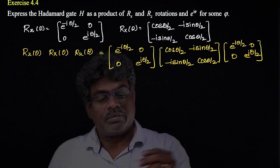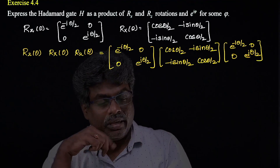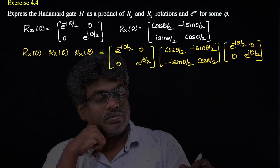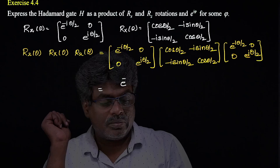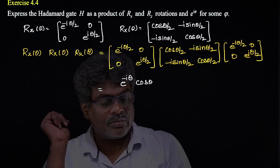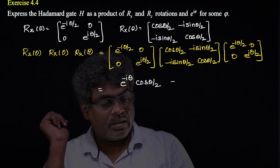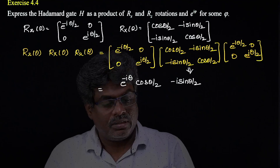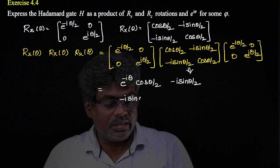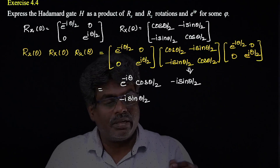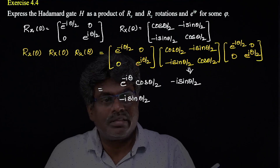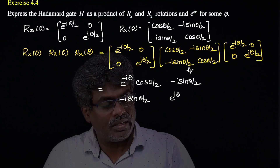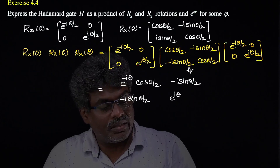Observing carefully: for the off-diagonal of the middle matrix, we have e^(-iθ/2) times -i·sin(θ/2), and -i·sin(θ/2) with no change in the other off-diagonal. For the (2,2) element, e^(iθ/2) · e^(iθ/2) gives e^(iθ) · cos(θ/2).